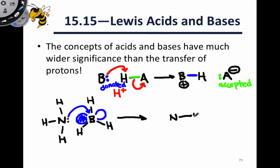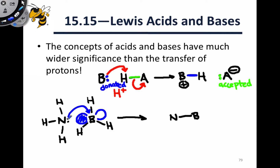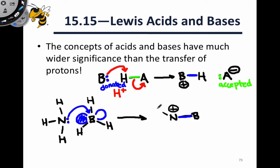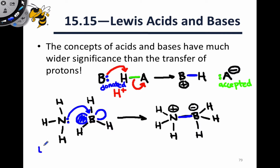What can happen is the lone pair on nitrogen can be donated to the boron, and the resulting product contains a new bond between nitrogen and boron. This new bond is a lot like the bond formed in the Bronsted case between B and H — this lone pair ultimately becomes part of a bond in which both electrons came from the nitrogen atom. We end up with a positive charge on nitrogen, while the boron atom ends up with a negative charge, having gained electrons through this process. So NH3 is an electron pair donor, while BH3 is an electron pair acceptor.